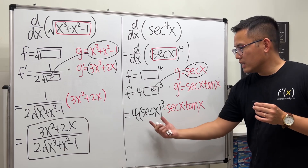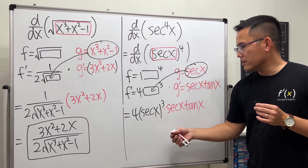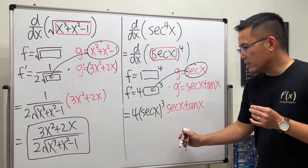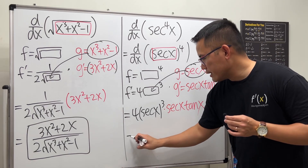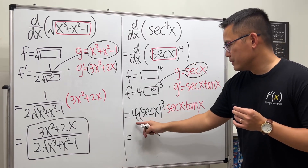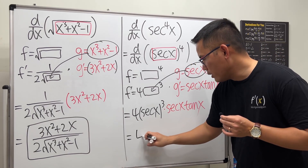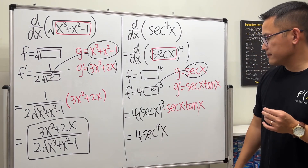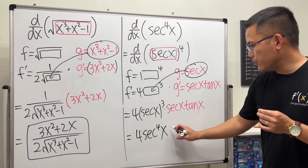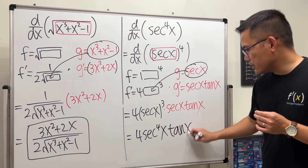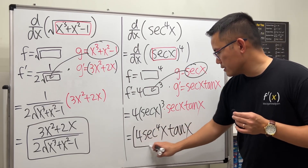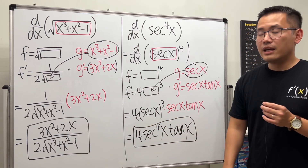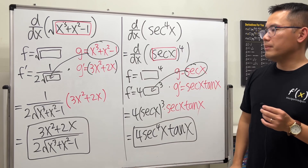We see that we have sec³(x) and then sec¹(x) — combining those two we get sec⁴(x). So the final answer is 4·sec⁴(x)·tan(x), and we're done. Hopefully this makes the chain rule more clear.